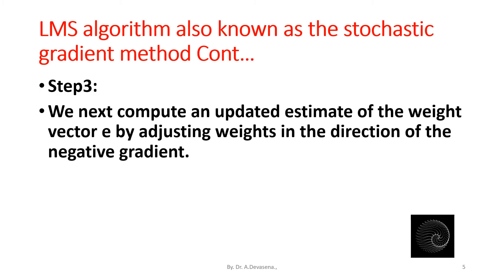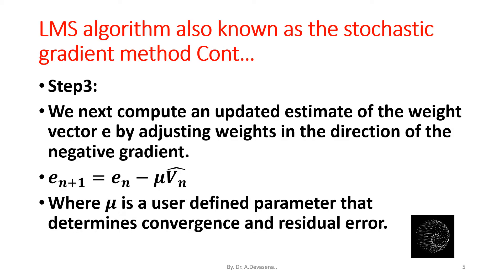Step 3: We next compute an updated estimate of the weight vector by adjusting weights in the direction of the negative gradient. e_(n+1) = e_n - μV̂_n where μ is a user-defined parameter that determines the convergence and residual error.